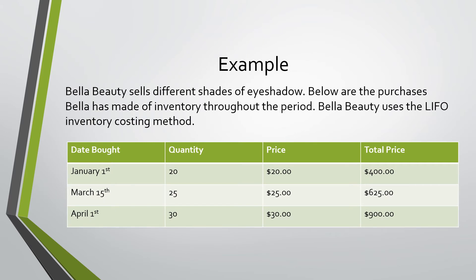In this example we see that Bella Beauty sells different shades of eyeshadow. Below are the purchases Bella has made of inventory throughout the period. Bella Beauty uses the LIFO inventory costing method. On January 1st, Bella Beauty purchased 20 different eyeshadow palettes for $20 each. On March 15th, they bought 25 eyeshadow palettes for a cost of $25 each. And on April 1st, they bought 30 eyeshadow palettes for a cost of $30 each.